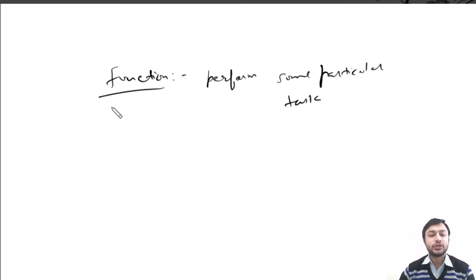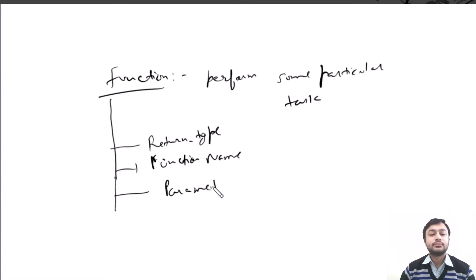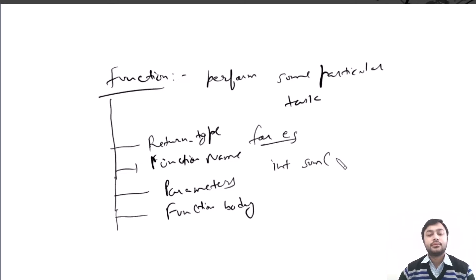What are the different parts of a function? The first part is return type. The second part is function name. The third part, which is optional, is parameters. And the fourth part is function body. For example: int sum(int a, int b).